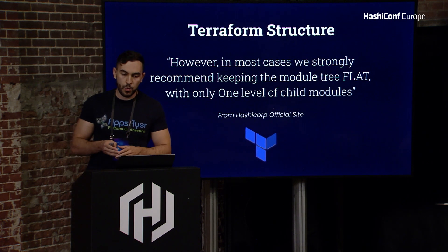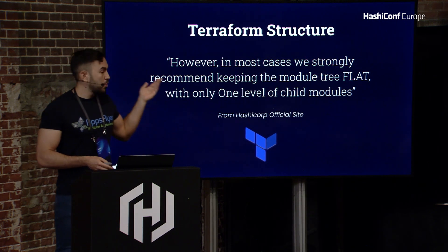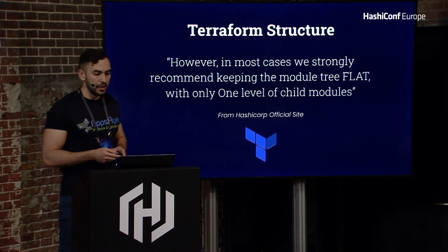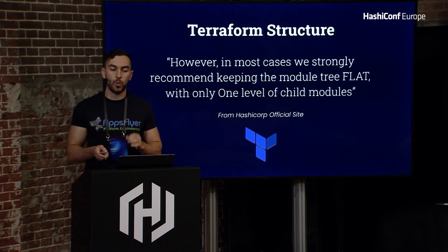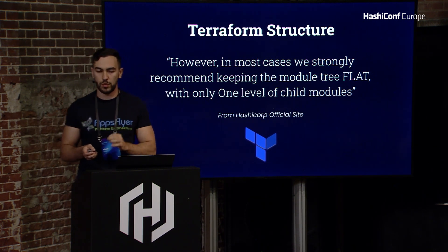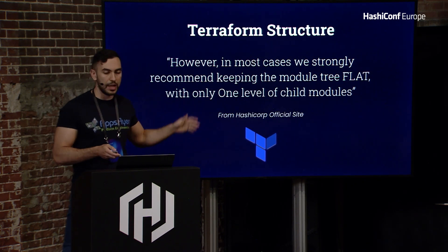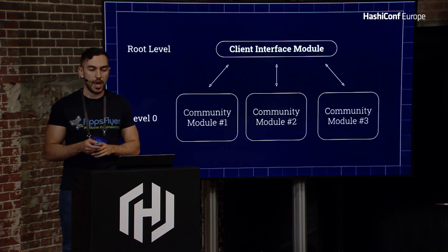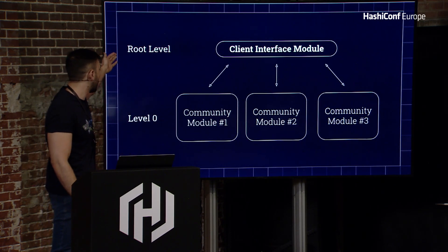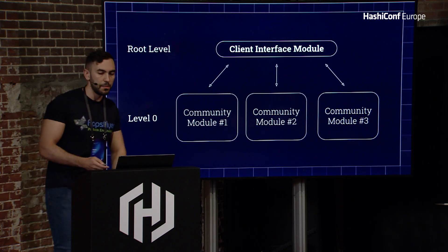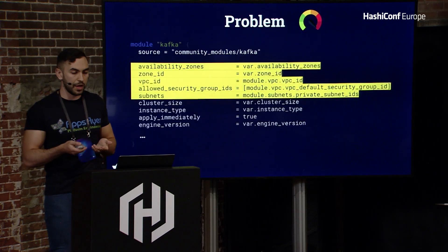The Terraform documentation says that Terraform supports module composition by default, but recommends keeping modules to reflect only one level of child modules. So we needed to change our approach to a flat hierarchy. At this stage, we have one level of child modules — the root level and the child modules. We flattened our tree and confirmed it was correct.